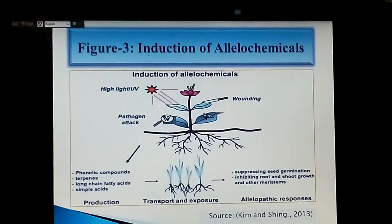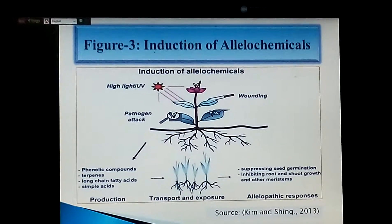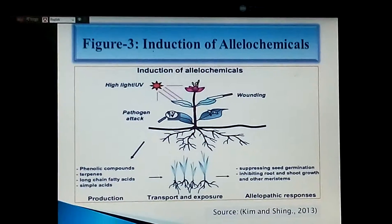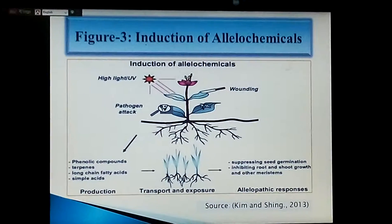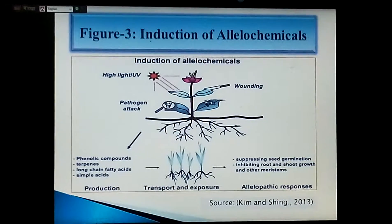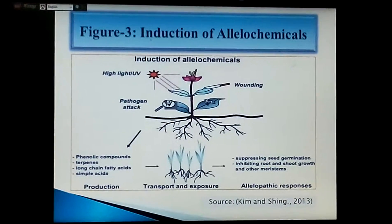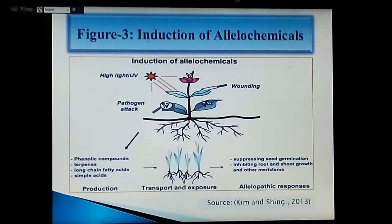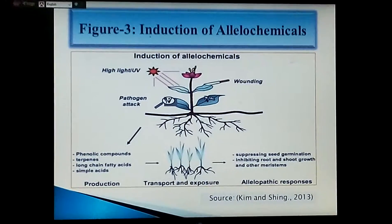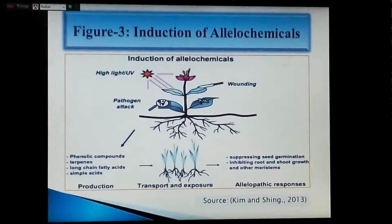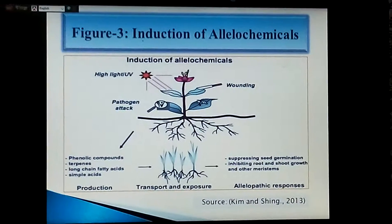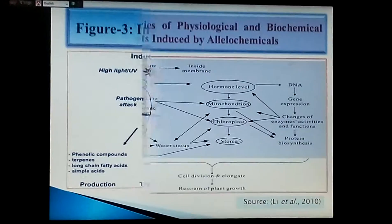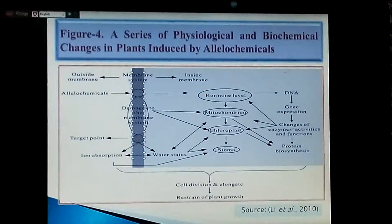Figure 3 shows the induction of allelochemicals due to exposure to high light, ultraviolet radiation, or pathogens. Active allelochemicals are released from the donor plant, act on the receptor plant, and finally cause suppression of seed germination, inhibition of root and shoot growth, or other effects. Sometimes they also have a positive effect.